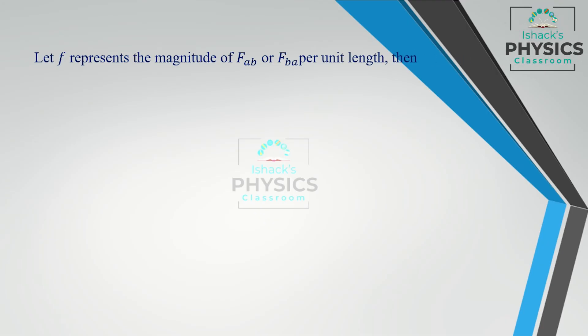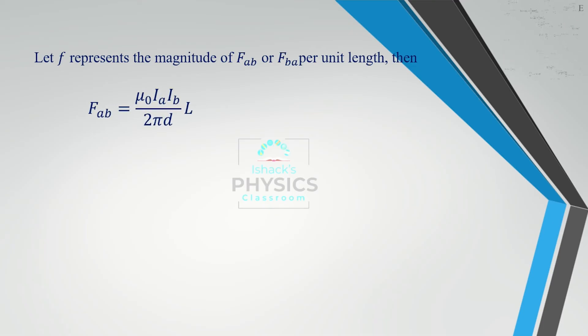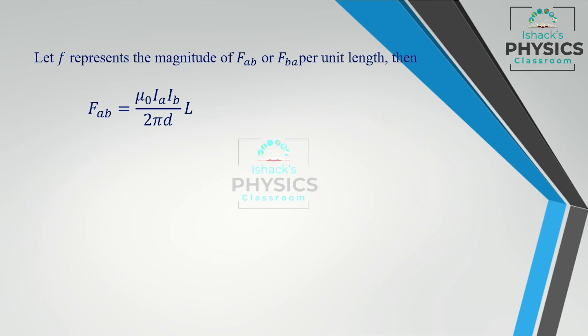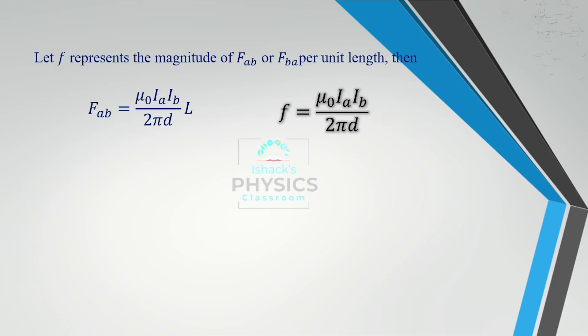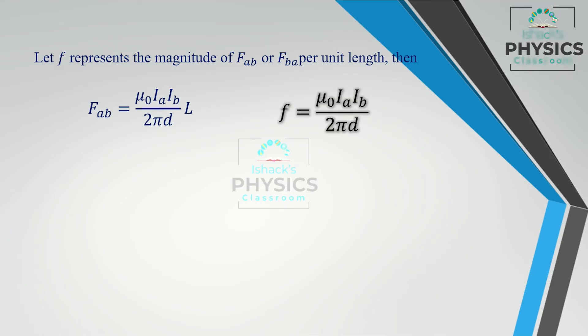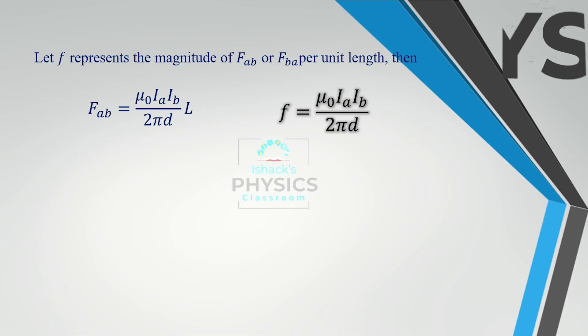Let F represent the magnitude of FAB or FBA per unit length. Then, the force per unit length is FBA / L = μ0IaIb / 2πd. So the magnitude of the force experienced per unit length between the two parallel current-carrying conductors is F = μ0IaIb / 2πd.